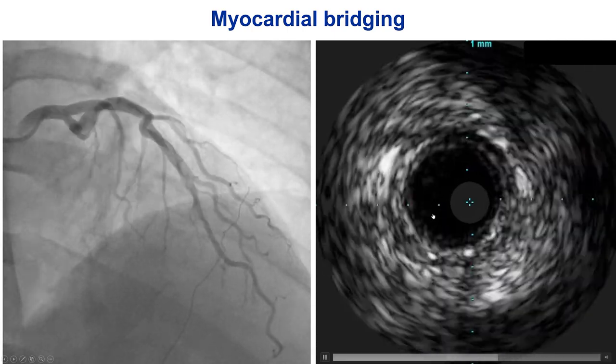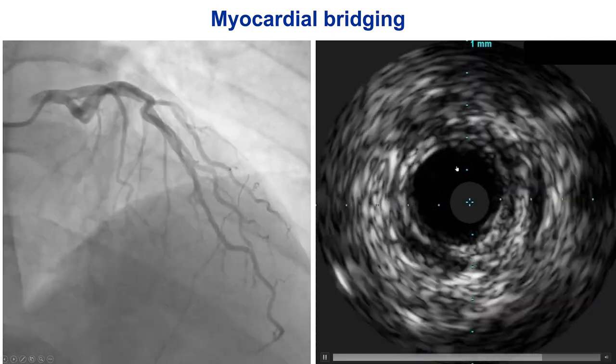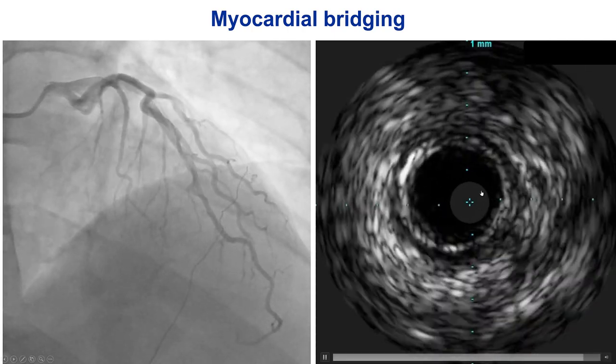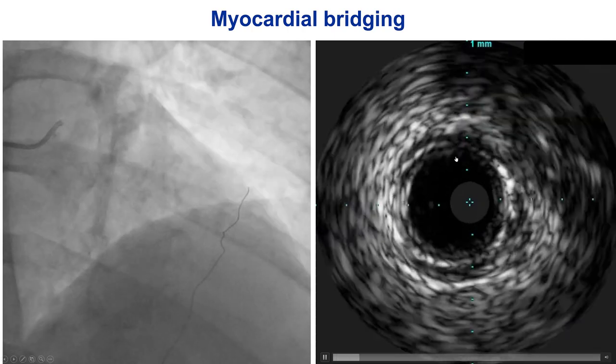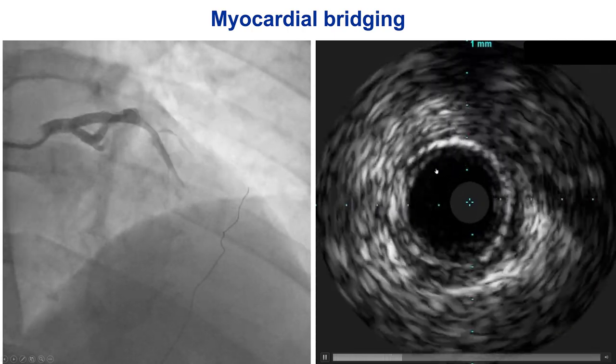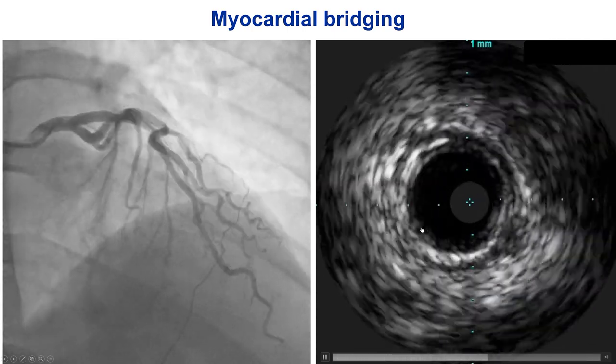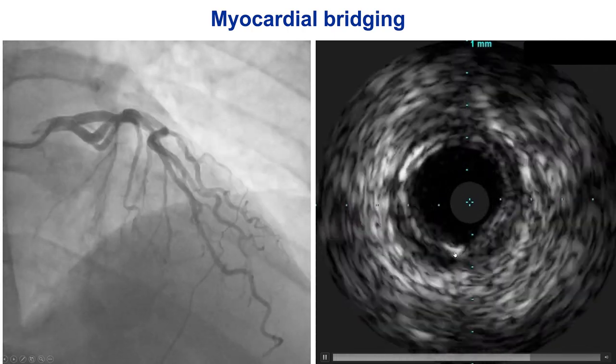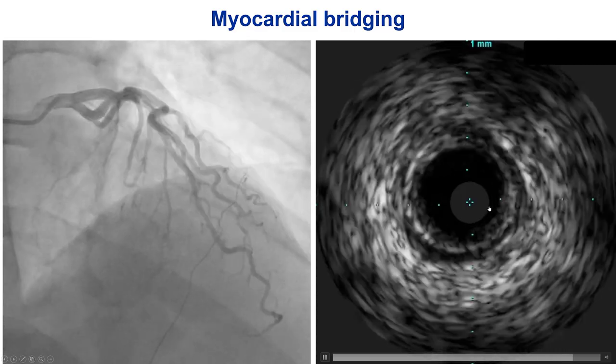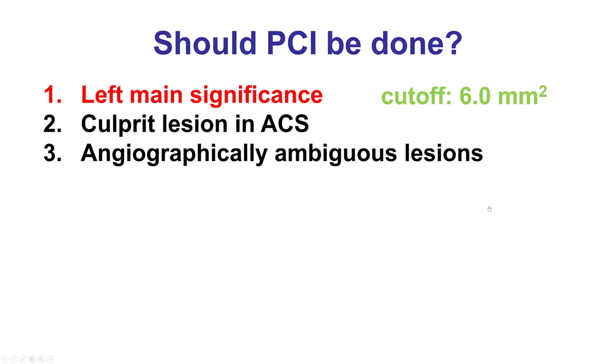This is an example of bridging. We see that the diameter of the vessel is decreasing with every cardiac beat. This is an example of how myocardial bridging looks under intravascular ultrasound.